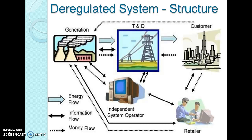Let us see the structure of the deregulated power system. The identification and separation of the various tasks, which are normally carried out in the traditional organization, so that these tasks can be open to competition whenever practical and profitable — this is nothing but unbundling. The purpose of deregulation is to restructure the electric industry so that the power production and retail sales are competitive, while delivery is still a regulated one.